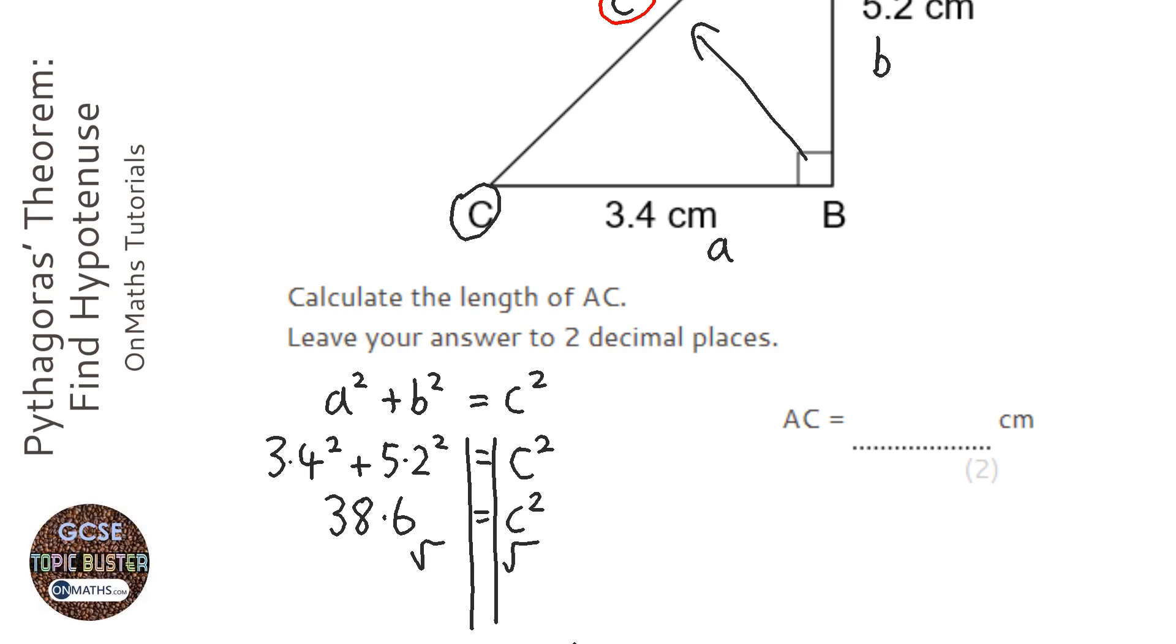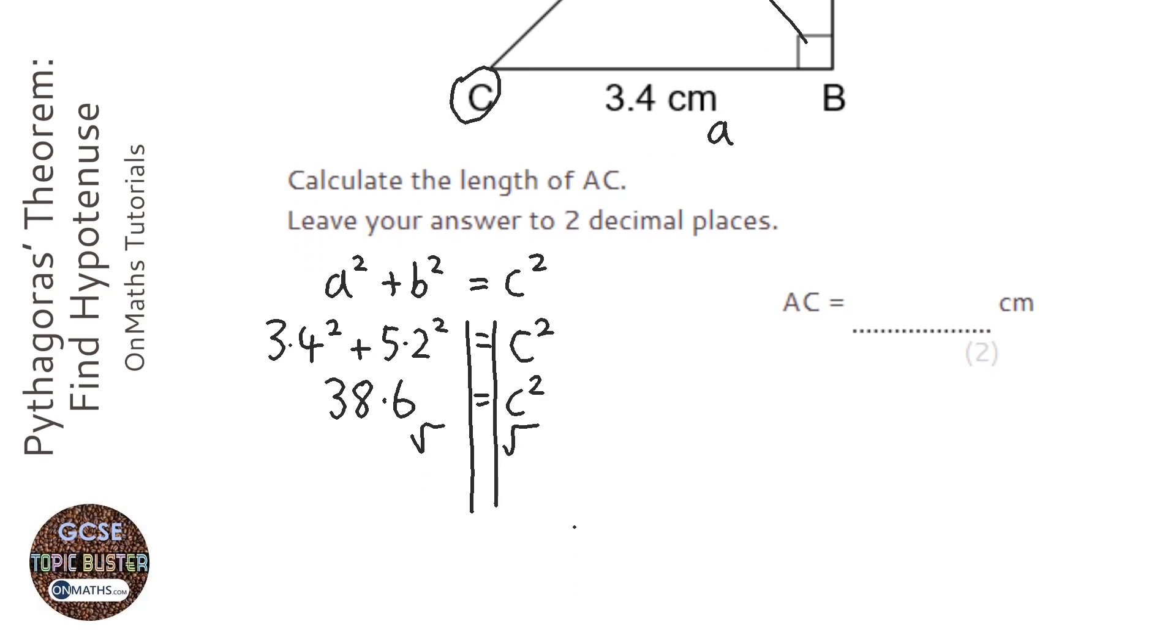And I'm going to square root both sides, so I'm going to press the square root button and then just answer, or I could type in 38.6.